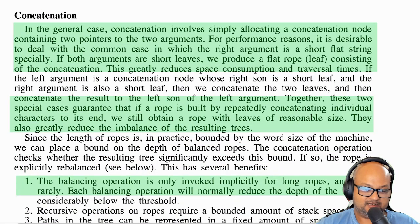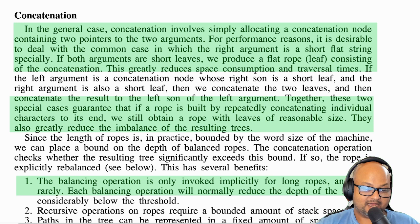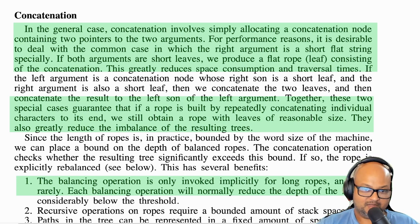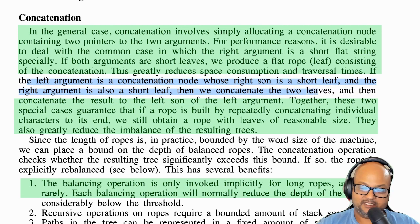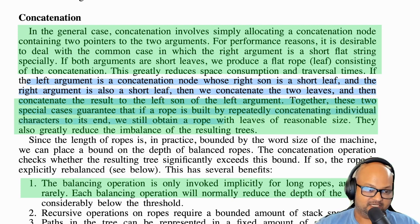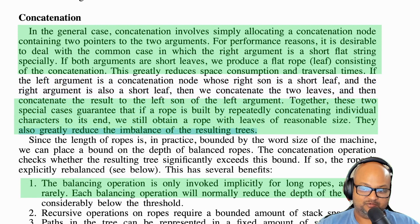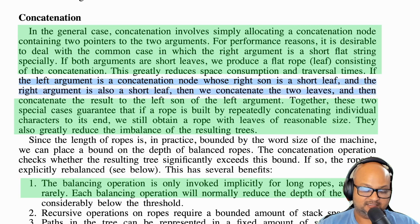Now let's look at how we would concatenate. Conceptually it's pretty simple: if you have two ropes representing two separate strings, you could simply create a new root and have these two ropes as children of this new root. On top of that simple conceptual framework, you can layer on several performance optimizations. For example, if both strings you're concatenating are very short, you could just create a simple flat rope or flat string. You can also do optimizations to ensure that if you're doing the common operation of constructing a string by individually concatenating characters to its end, you end up with a tree that's not lopsided.